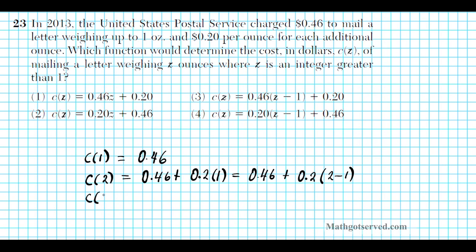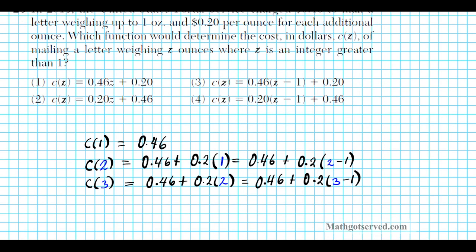For 3 ounces, it's the base rate 0.46 plus 0.2 times the number of ounces above 1: 3 minus 1 is 2, so it's 0.46 plus 0.2 times (3 minus 1). The pattern is becoming clear — for each weight, we multiply 0.2 by the number of ounces above 1 and add the flat rate.